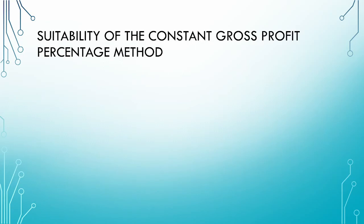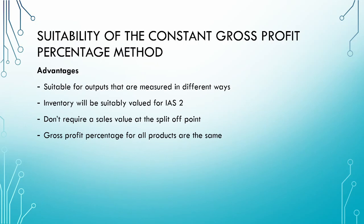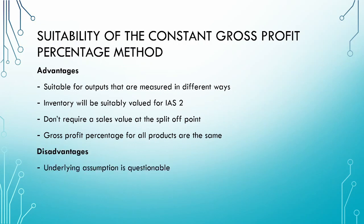Let us consider the suitability of the constant gross profit percentage method. Its advantages are that it addresses the problems of the physical measures method — it can be used when outputs are in different units such as liters or kilograms, and inventory is correctly valued without needing a write-down to net realizable value. It also addresses the weakness of the sales value at split-off method, as no split-off sales value is required. Additionally, it addresses the net realizable value method's weakness, as all products share the same gross profit percentage. The disadvantage, however, is that the assumption that all products should have the same gross profit percentage is questionable.